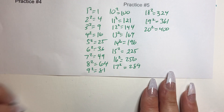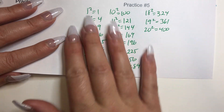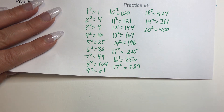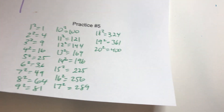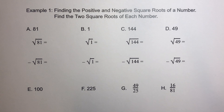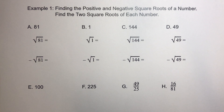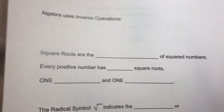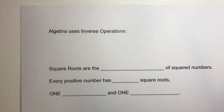Okay, well hopefully you beat me. If not, keep practicing until you can beat me. All right, so let's look at example one. Okay, example one says finding the positive and negative square roots. Wait, that's not what I want — I want this one first. Okay, sorry about the confusion.